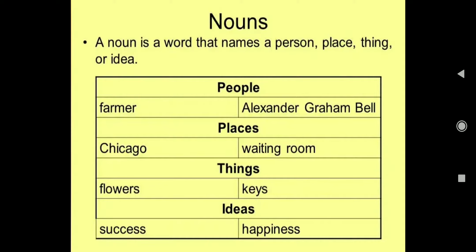Second is places — Chicago is a place, waiting room is a place, noun kahlaayenge. Third one is things — flowers, keys — things hain, noun kahlaayenge. Ideas or feelings — success kia hai, idea hain, feeling hain; happiness, feeling hain, to again noun kahlaayenge. So people, place, things and ideas — hamaré noun kahlaate hain.